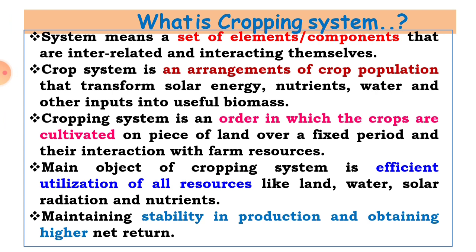Cropping system is an arrangement of crop population. You have to arrange the crop population or cropping pattern that transforms solar energy, nutrients, water, and other inputs into useful biomass. The arrangement of crops on the land which can transform the available resources — solar energy, nutrients, water, and other inputs — into useful biomass. That is called as cropping system.